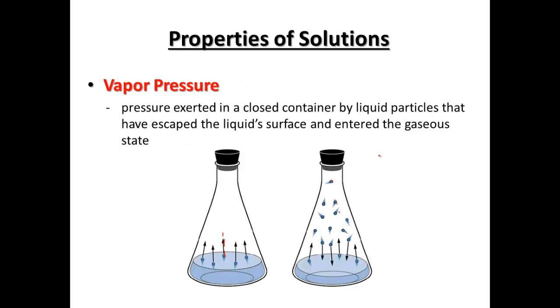Now vapor pressure, if we have a closed container you can have liquid starting out that's going to be able to move and become a gas. Now as that builds up we have an equilibrium between the gas particles in the air and the liquid down below and they can kind of move back and forth between those two to get to a balanced point.